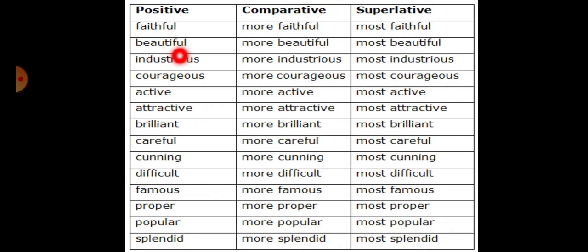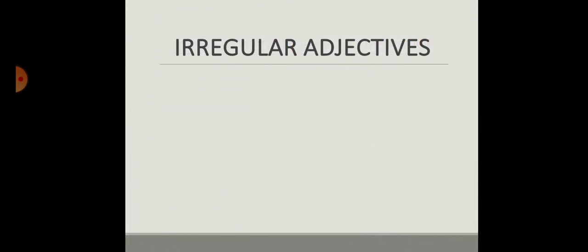—like faithful with two syllables, or beautiful with three syllables. Words that have two or more syllables, most often you use more or most with them, then simply write them in their first form: more faithful and most faithful. You can go through the whole slide.